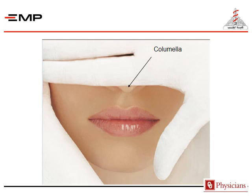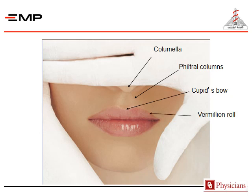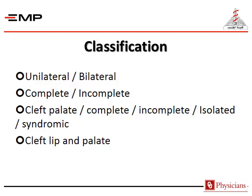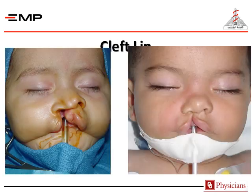Here's the columella, the philtral column, Cupid's bow, the vermilion roll, the wet vermilion and the dry vermilion. Classification: it may be unilateral or bilateral, complete or incomplete — cleft lip, cleft palate, complete or incomplete, isolated or syndromic.